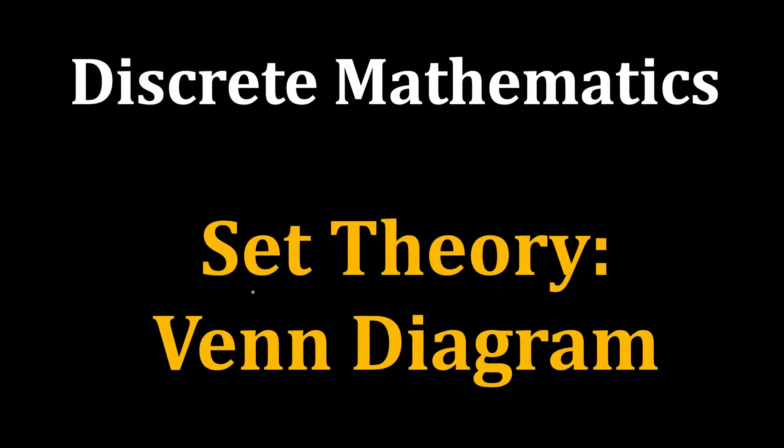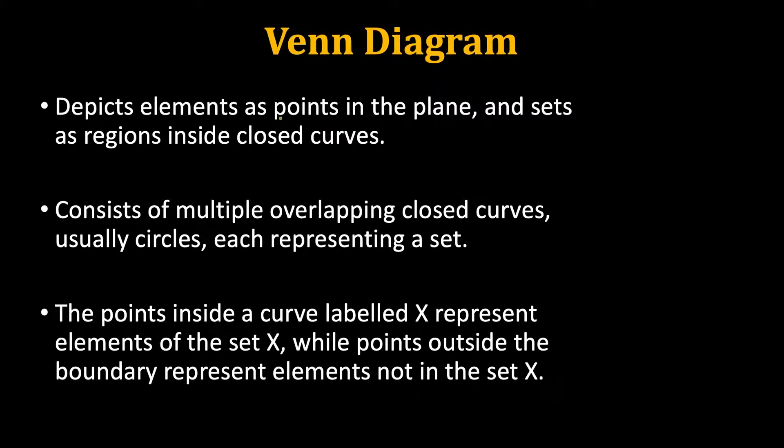In this video, we are going to see an interesting way of representing sets that is very intuitive and easy to understand. This is called a Venn diagram. In a Venn diagram, elements are represented as points in a plane, and sets are represented as closed regions enclosing those points.